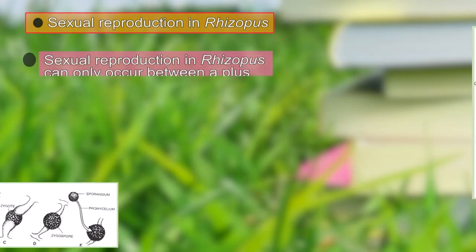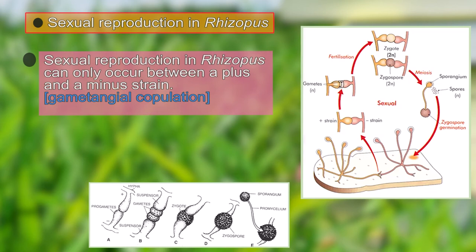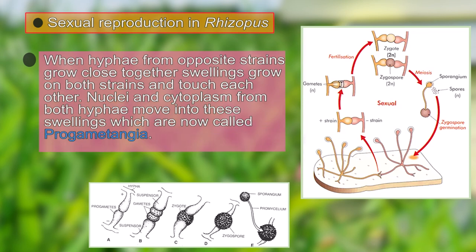Sexual reproduction in Rhizopus is also referred to as gametangial copulation, as it involves the mixing of two different gametangia. When hyphae from opposite strains grow close together, they swell up. In a diagrammatic sketch we find two strains — a plus strain and a minus strain — coming close to each other. Hyphae from both strains come in contact, and nuclei and cytoplasm from both move into these swellings.